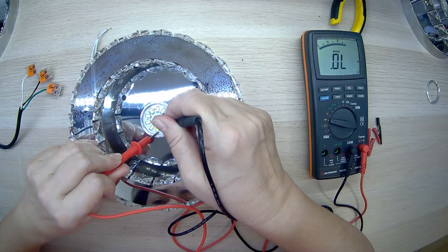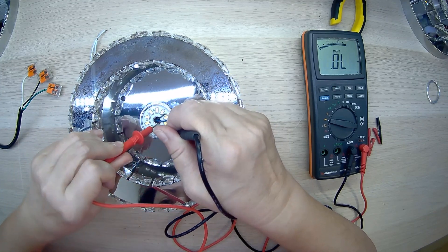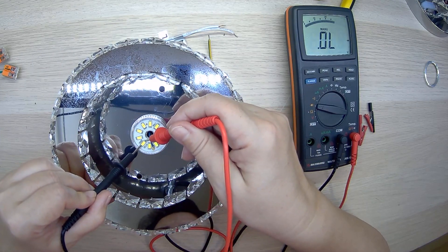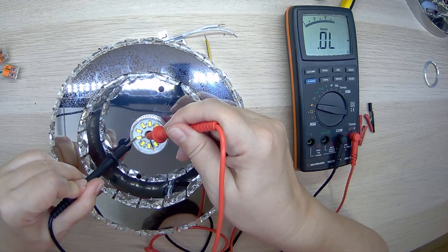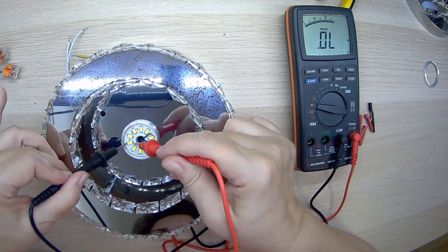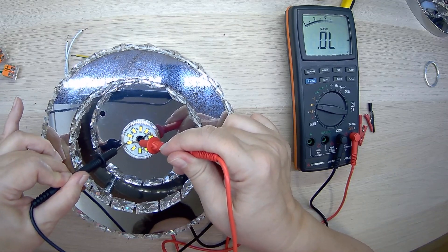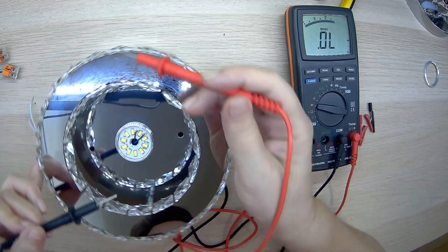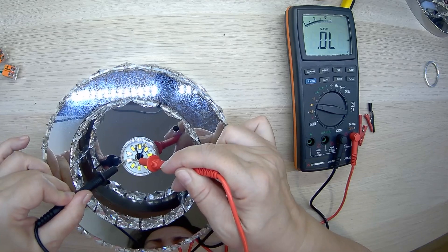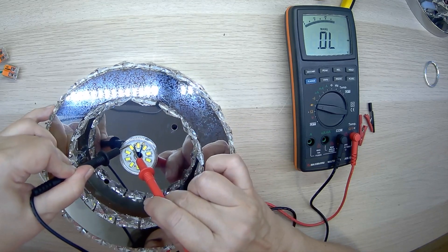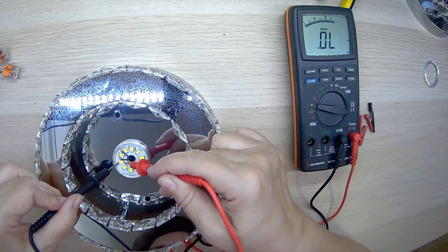We connect the multimeter probes and see that two LEDs light up at the same time. That means that the LEDs are connected in pairs. The type of LEDs 5730 are determined from the inscription on the small panel and the LED dimensions are 5.7 by 3 millimeters.